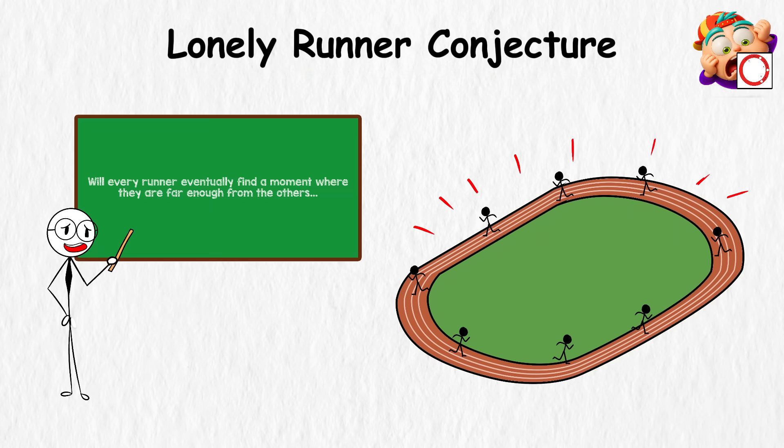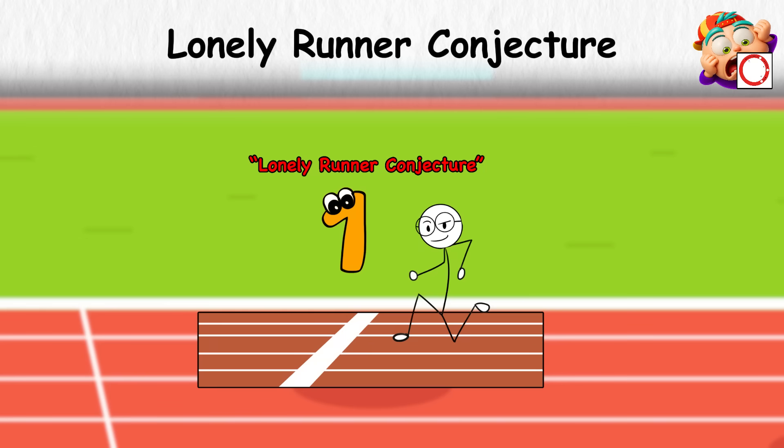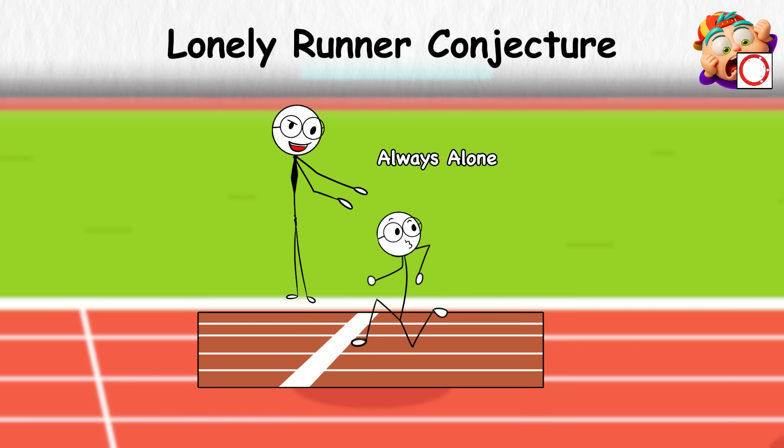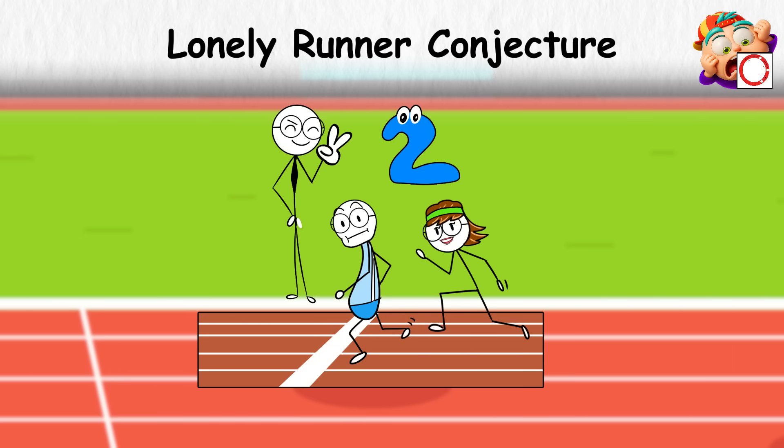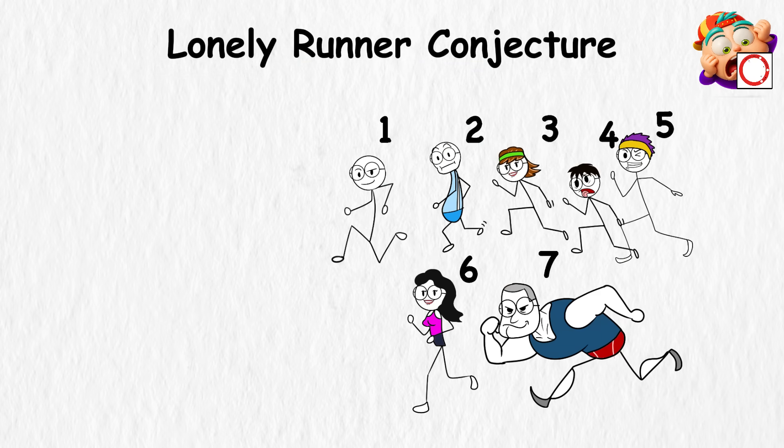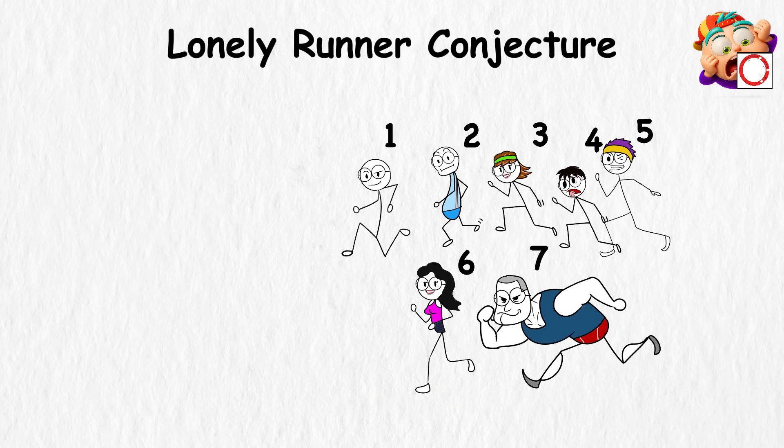The question is simple. Will every runner eventually find a moment where they are far enough from the others that they're running alone? That's the lonely runner conjecture. With one runner, the answer is obvious. They're always alone. With two runners, it's easy to check. For three, four, five, six, and even seven runners, mathematicians have proven it works. At some point, each runner is guaranteed their lonely stretch.